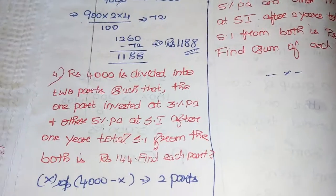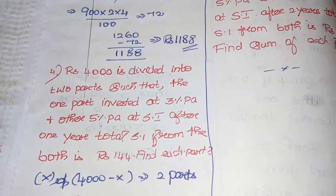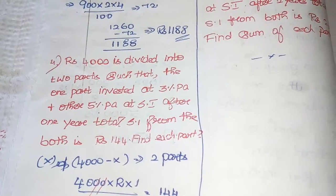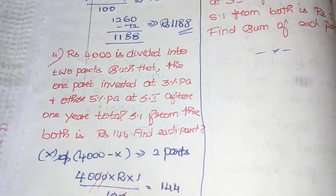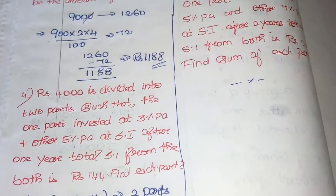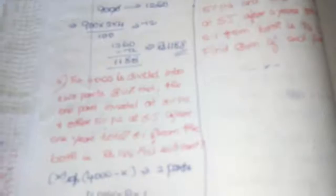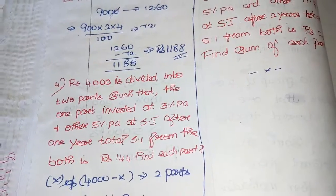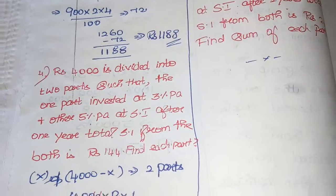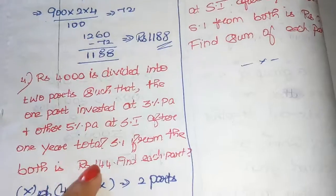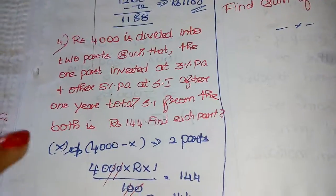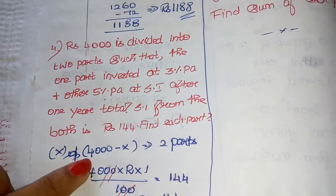Next question: ₹4,000 is divided into 2 parts such that one part is invested at 3% simple interest and the other part at 5% simple interest per annum. After 1 year, the total SI from both parts is ₹144. Find each part. Let one part be X and the other be 4,000 minus X.